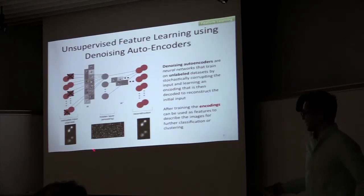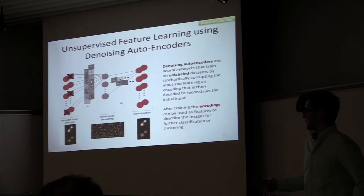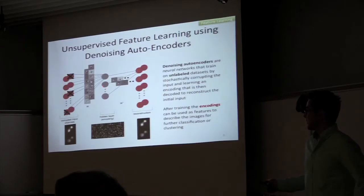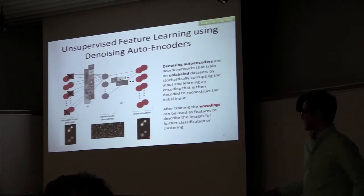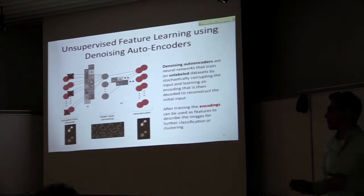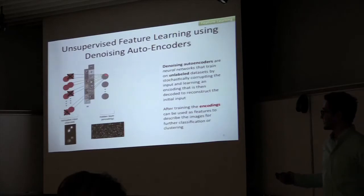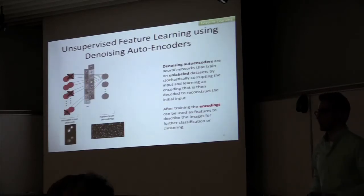In a denoising autoencoder, the original image is corrupted by dropping out pixels, then passed through a neural network layer where the hidden units are non-linear functions of linear combinations of the input pixels. These are then transformed again by the transpose of the original filters to generate a reconstruction of the original image, and the weights are updated to minimize the reconstruction error between the reconstructed and original image. Once we train the network, we can use the actual feature encodings for further clustering or classification.